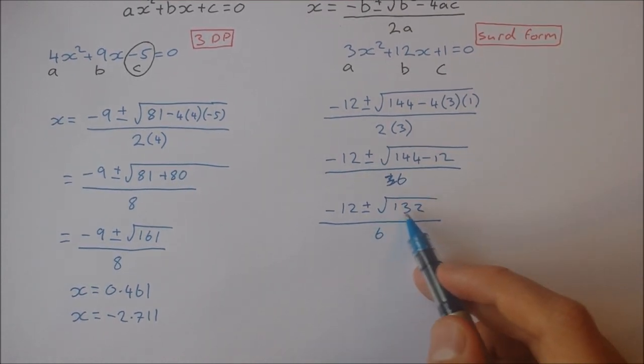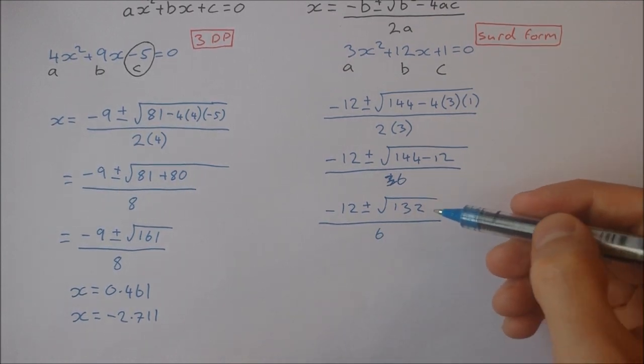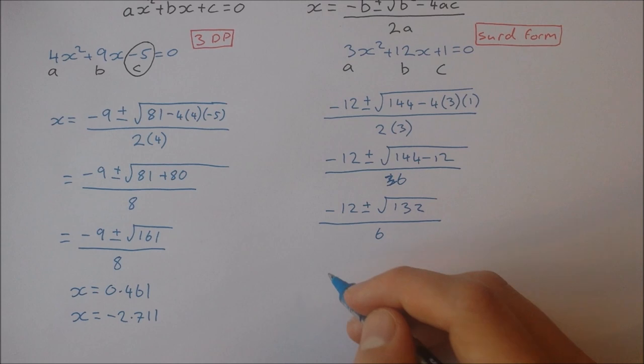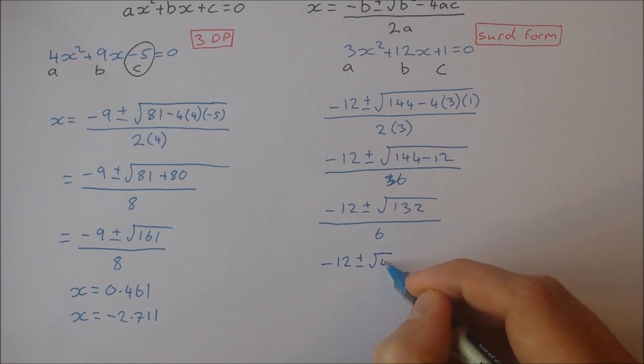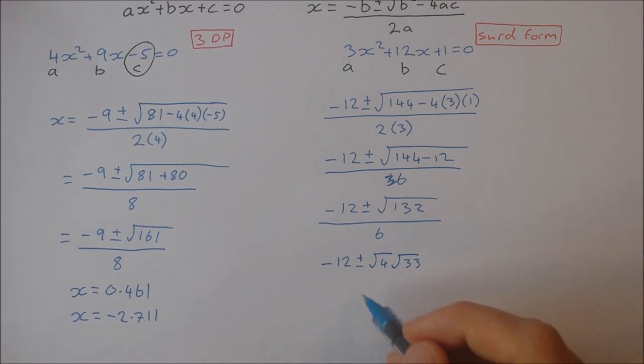Okay, now the square root of 132, I can actually simplify that. 132 is divisible by 4, which is a square number, so I'm going to rewrite as minus 12 plus and minus the square root of 4 times the square root of 33. 4 times 33 is 132, and this is over 6.